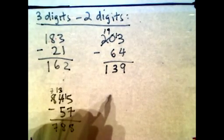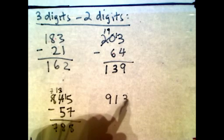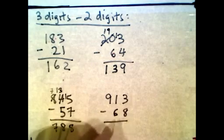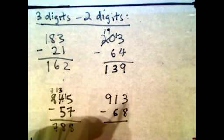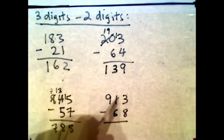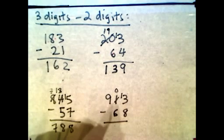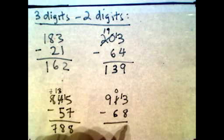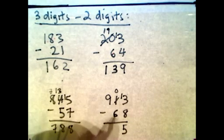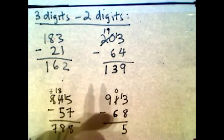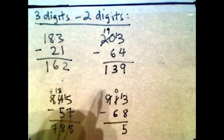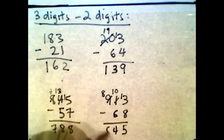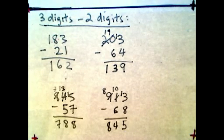Try another one: 913 minus 68. 8 is bigger than 3, so you borrow from the 1 tens, which becomes 0. Bring that 10 over to the 3, making it 13. 13 minus 8 gives you 5. Now 0 minus 6 — 6 is bigger than 0, so borrow from the 9 hundreds, which becomes 8. Now it's 10. 10 minus 6 is 4. Bring down the 8. The answer is 845.